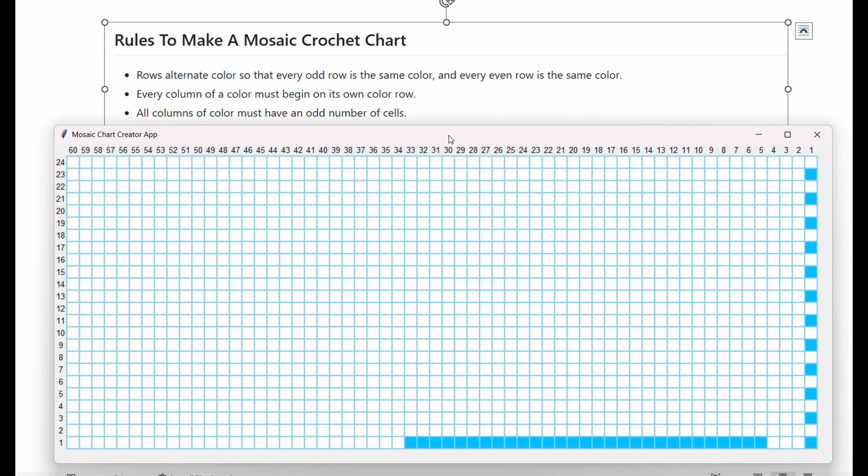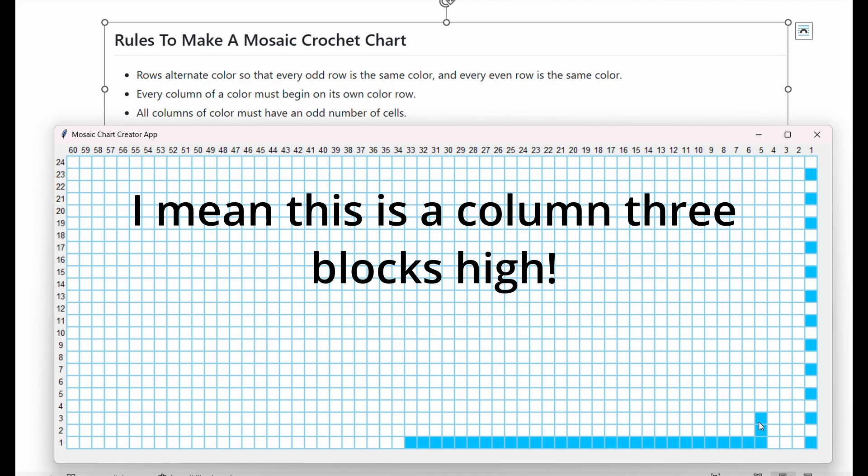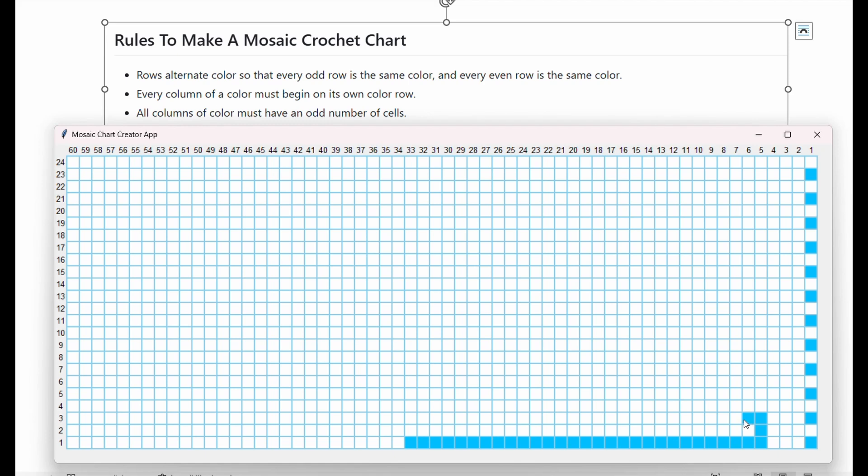Next rule would be all columns of a color must have an odd number of cells. So column would be like this, and you can see this is three columns large. And I could also make these two would be like an odd column of the size one. But if I went up more than here's another column, that would be three. And then you have to think of the white too, where this is just a small one column, big white one.